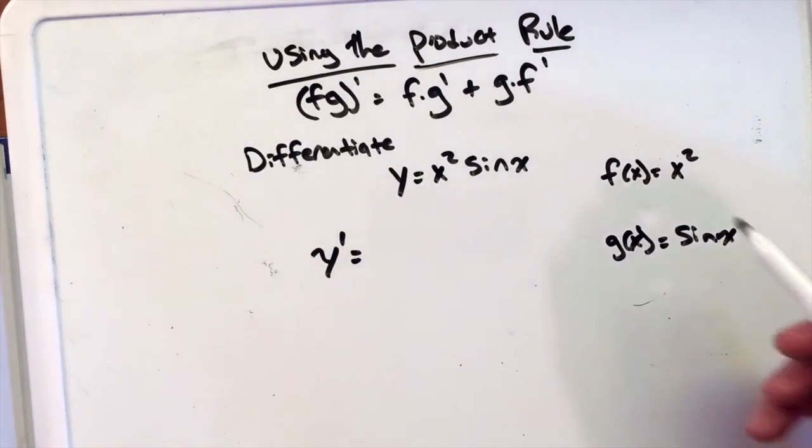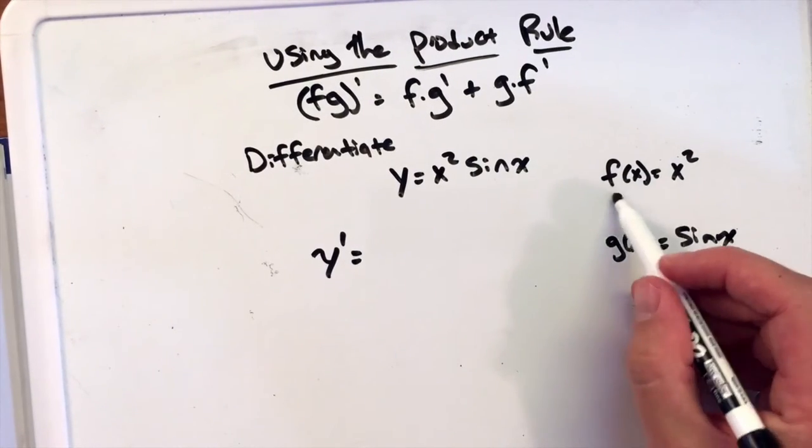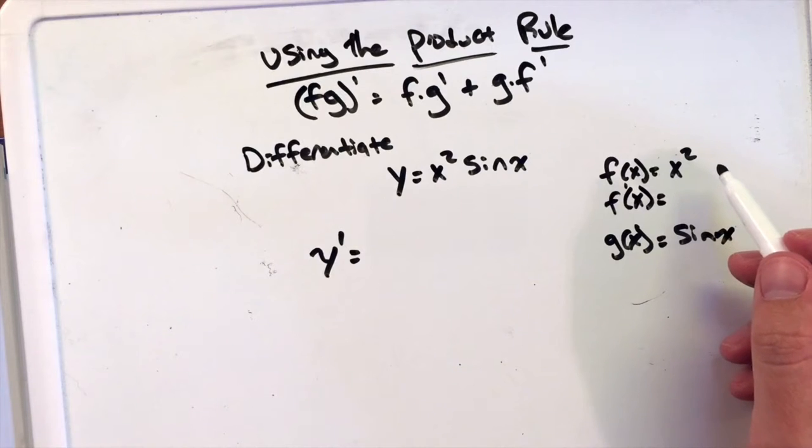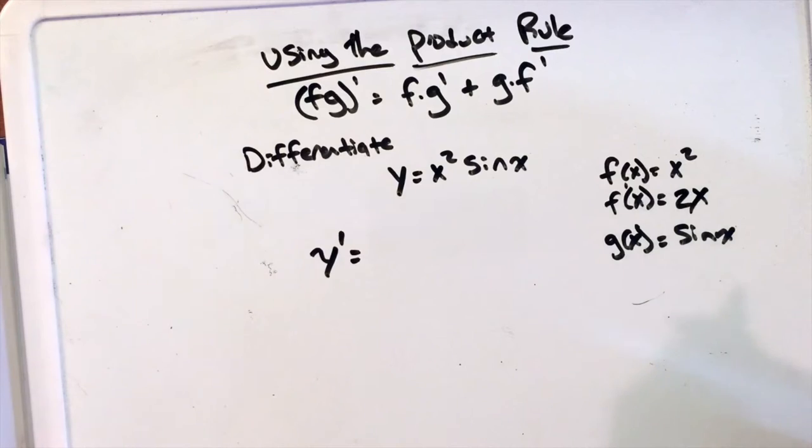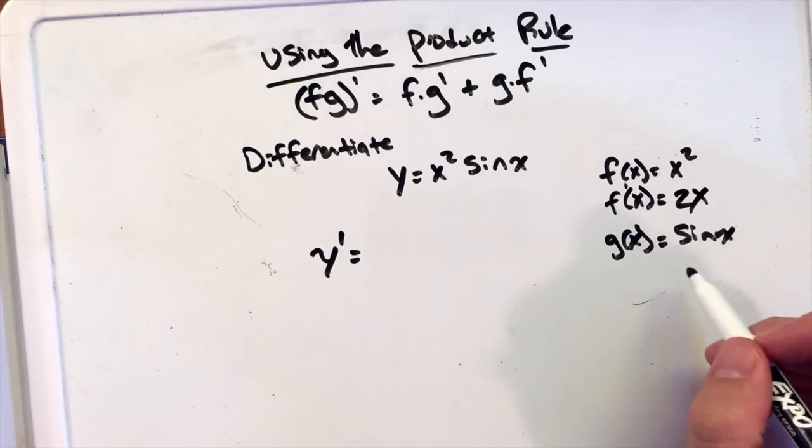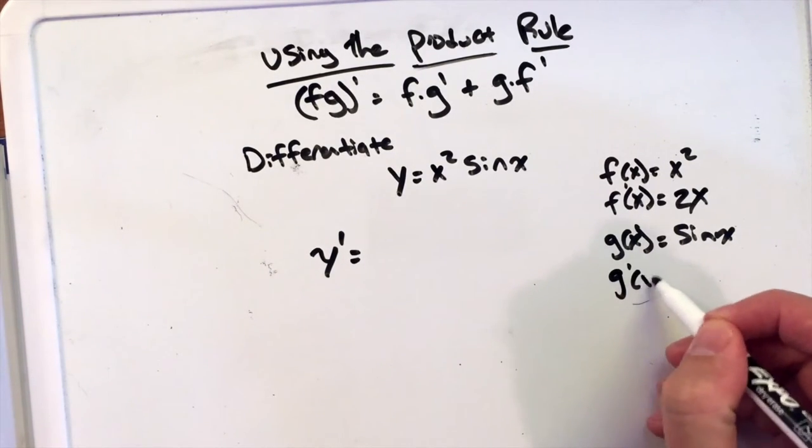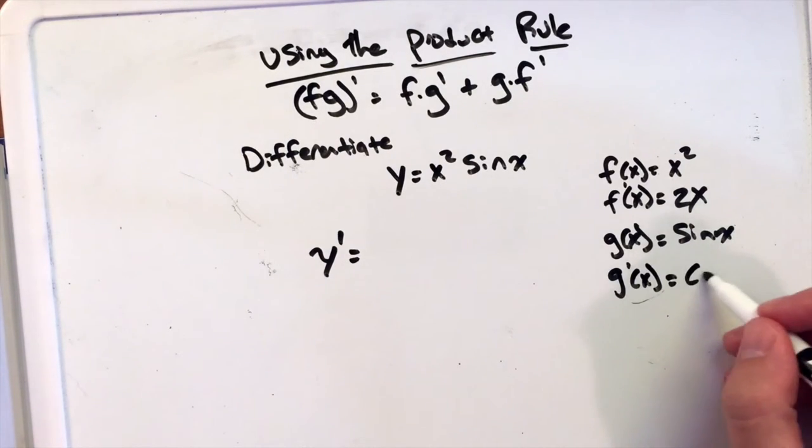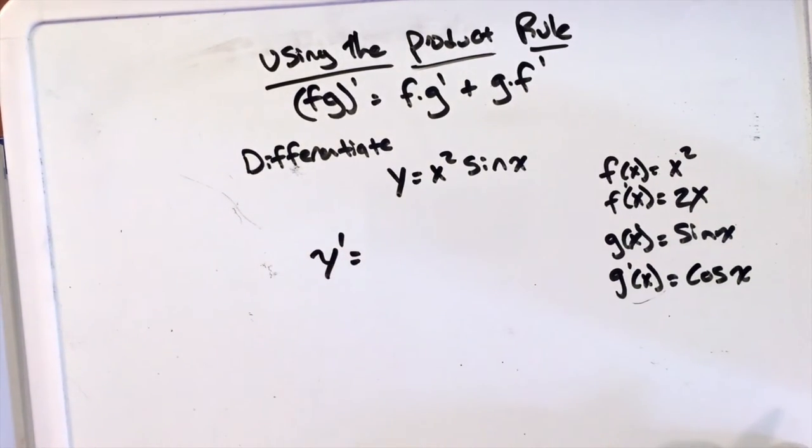It's good to state that beforehand. So then if f of x equals x squared, what is f prime of x? And we know that using the power rule that is 2x. And g of x, well g prime of x, if our g of x is sine of x, g prime of x will be cosine of x.